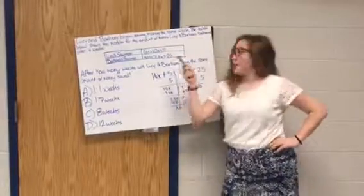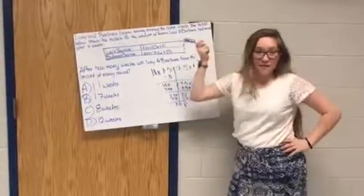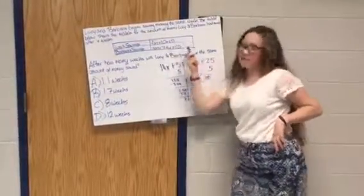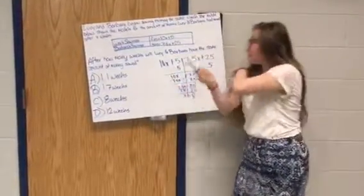The table below shows the models for the amount of money Lucy and Barbara had saved after x weeks. Lucy's savings, f(x) = 10x + 5, and Barbara's savings, g(x) = 7.5x + 25.